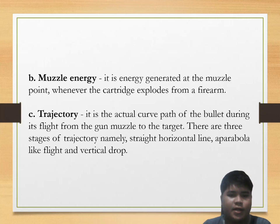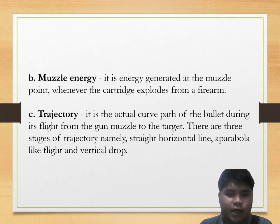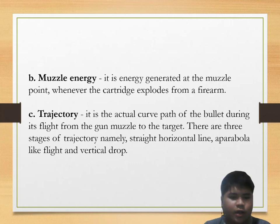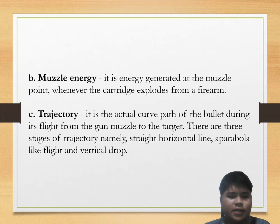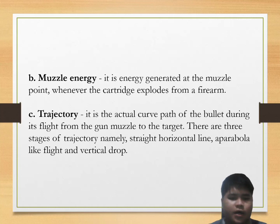Second is muzzle energy — the energy generated at the muzzle point whenever the cartridge explodes from a firearm. Next is trajectory, which is the actual curved path of the bullet during its flight from the gun muzzle to the target. The stages of trajectory are: a straight horizontal line, a parabola-like flight where the bullet is pulled by gravity forming an arc, and lastly a vertical drop where the bullet falls straight to the surface of the earth.